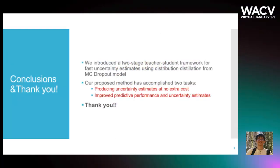In conclusion, we introduced a two-stage teacher-student framework for fast uncertainty estimates using distribution distillation from an MC Dropout model. Our proposed method is not only capable of producing uncertainty estimates at no extra cost, but also leads to improved predictive performance and more informative uncertainty estimates. Thank you for your interest.